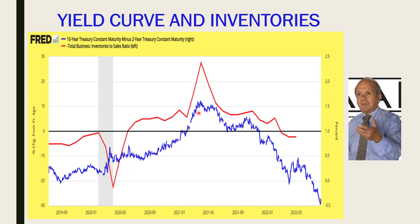The yield curve — the blue line — is also closely related to inventories. This is very important because when business decides to cut inventories, we are going to have a slowdown or even a deep recession, which I think is what is going to happen. The yield curve is steepening here, and look at the inventory-to-sales ratio. The fact that it is now coming down means sales are growing much slower than inventory. When that happens, business has to cut production, cut purchases of raw materials, borrow less, and hire fewer people. Business will become much more defensive and continue to reduce production.